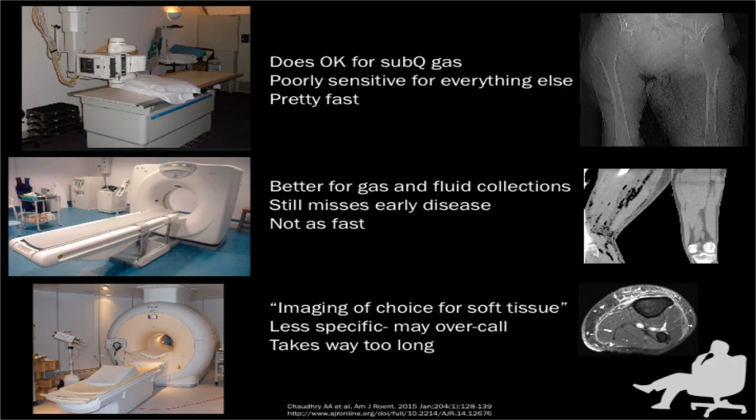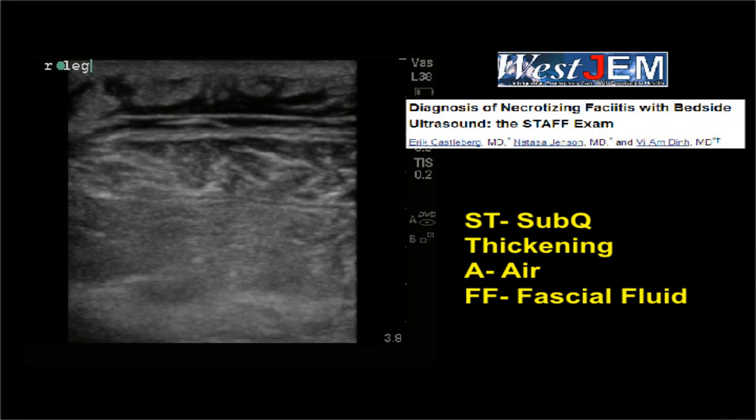Let's review our key modalities of imaging. X-ray radiography does okay for subcutaneous gas, but is poorly sensitive for everything else. CT scan is way better for most gas and fluid collections, but still misses a lot of early forms of this disease. Traditionally, MRI is touted as the imaging of choice for soft tissue, but there has been some evidence suggesting it's actually less specific for necrotizing fasciitis — meaning it may over-call necrotizing fasciitis when it's not actually present. MRI also often takes way too long to get, and when you have an infection potentially spreading at a rate of one centimeter an hour, time isn't on your side. Bedside ultrasound has been gaining a lot of steam for its role in diagnosing necrotizing fasciitis using the STAFF exam — subcutaneous thickening, air, and the presence of free fluid along the fascia — in contrast to the cobblestoning you would see with cellulitis.